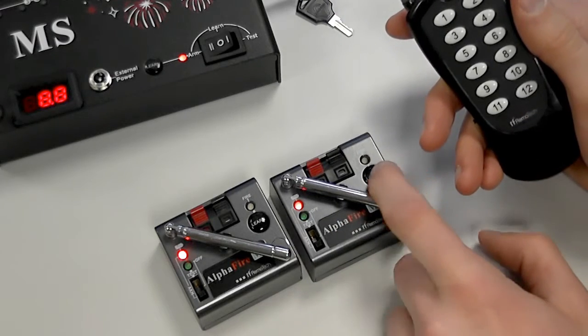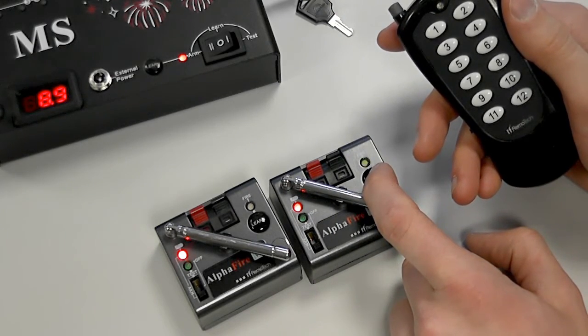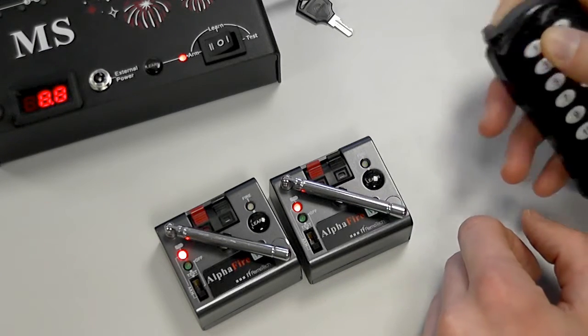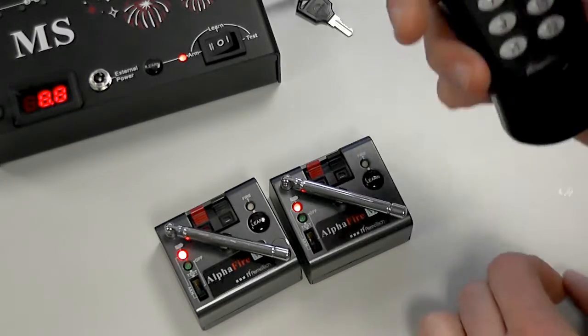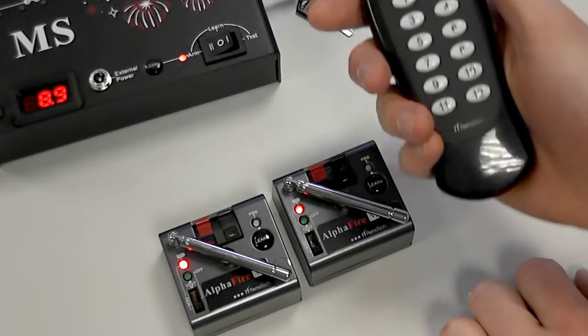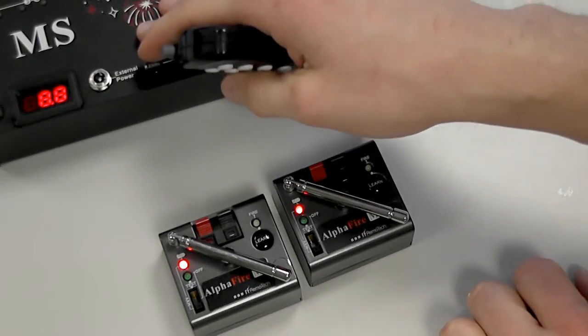We can do the same. Press and hold the learn button. We'll pair it to button one on the remote. Okay, so what's happened now is button one on this remote control is paired to these two receivers here and the entire remote control is also paired to the 12 cue receiver here.